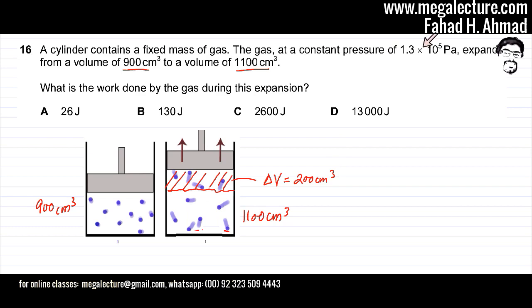The pressure of the gas is given as 1.3 × 10⁵ pascals. The formula for work done by an expanding gas at constant pressure is P × ΔV. So it's 1.3 × 10⁵ multiplied by 200 cm³,